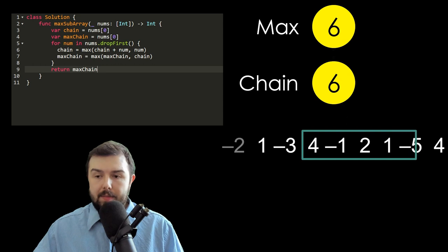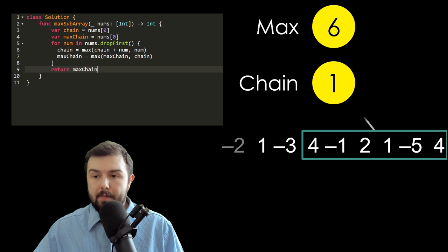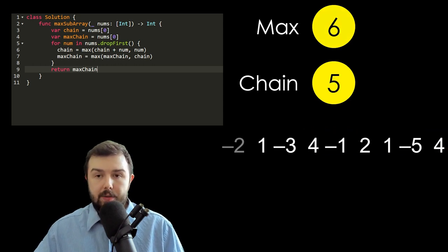Maximum becomes six. We expand it further. In this case, the chain becomes lower, so we are not interested to make our chain larger. And again it's not changed. So the answer is six.